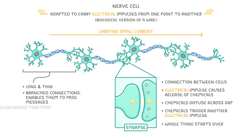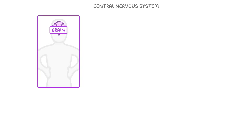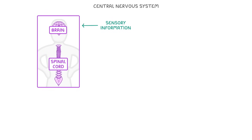Now imagine that you took 100 billion of these and added them all together — what you could have is the whole nervous system. One part of this is the central nervous system, which is made up of our brain and our spinal cord. This is where all of the so-called thinking takes place. It takes in loads of sensory information, decides what needs to be done about it, and then sends out orders to the rest of the body.